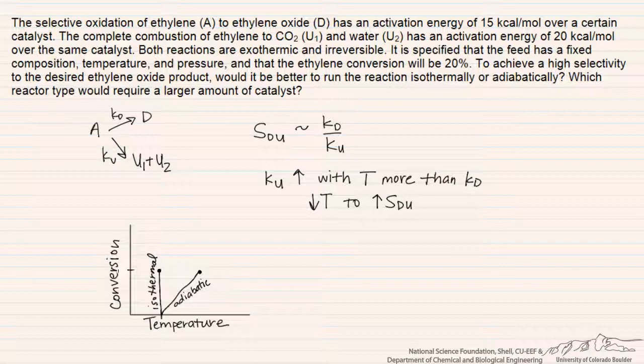And so therefore we expect that because the rate is higher in the reactor, we'll need less catalyst to achieve our conversion of 15%. And so the adiabatic reactor, because it operates at a higher temperature, will require less catalyst.